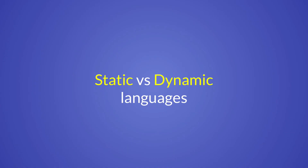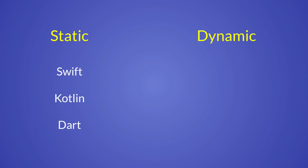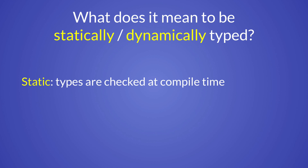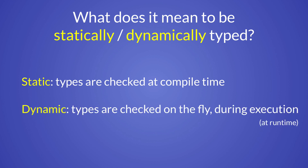When we talk about programming languages, there is one important distinction that is often mentioned, and that is the difference between statically and dynamically typed languages. For example, languages like Swift, Kotlin, and Dart are statically typed, while languages like JavaScript and Python are dynamically typed. A language is static when types are checked at compile time. On the other hand, a language is dynamic if types are checked on the fly during execution.